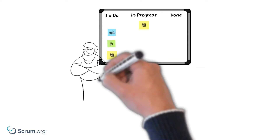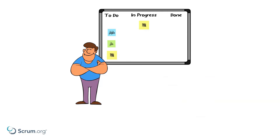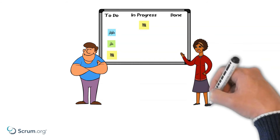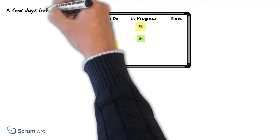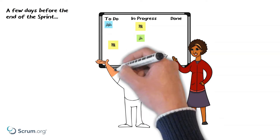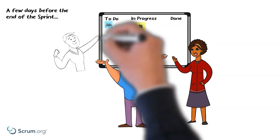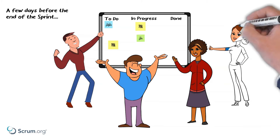Blake and Nisha have been working hard this sprint on a product backlog item for their online grocery website. They created a feature that allows customers to look at what they ordered previously on the website and easily repeat the same order again. Just a few days before the sprint ends, they move the product backlog item to done.